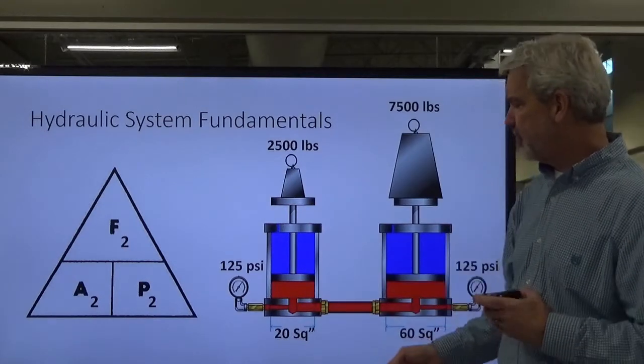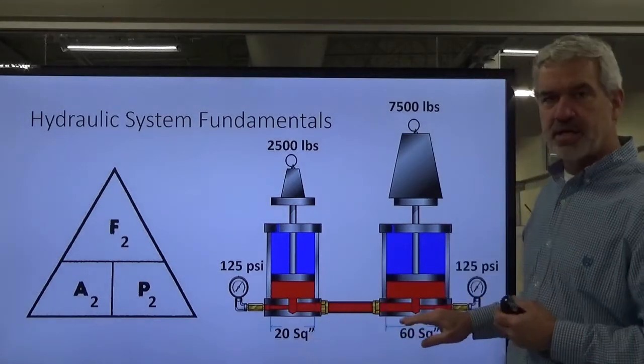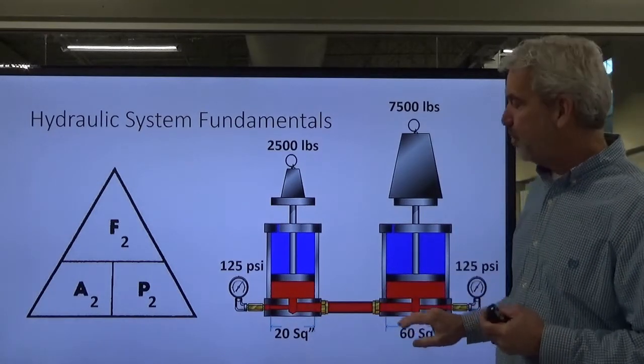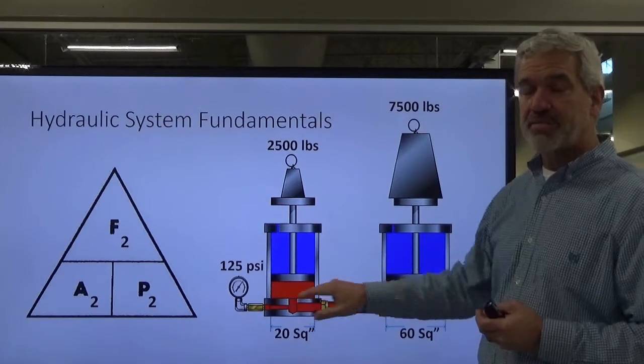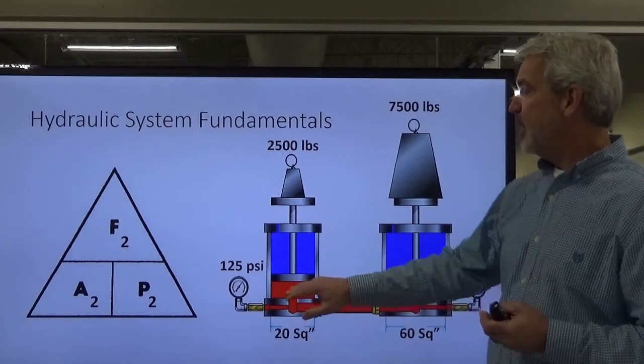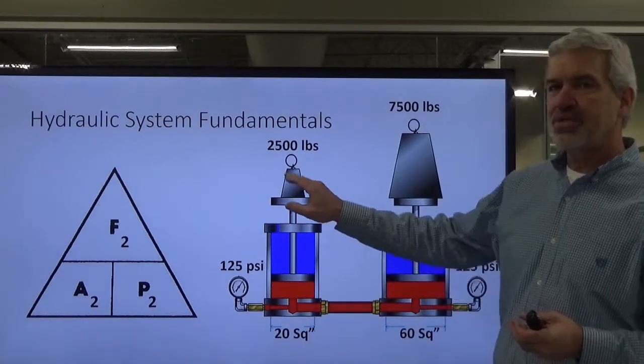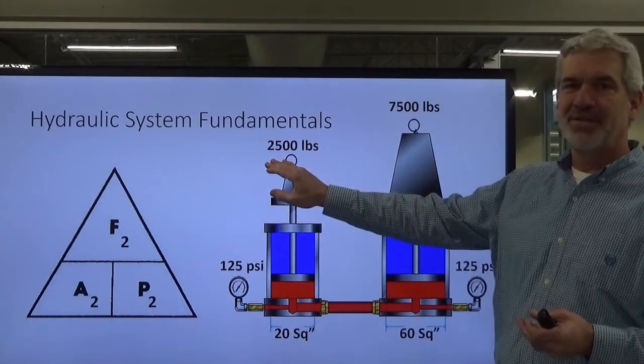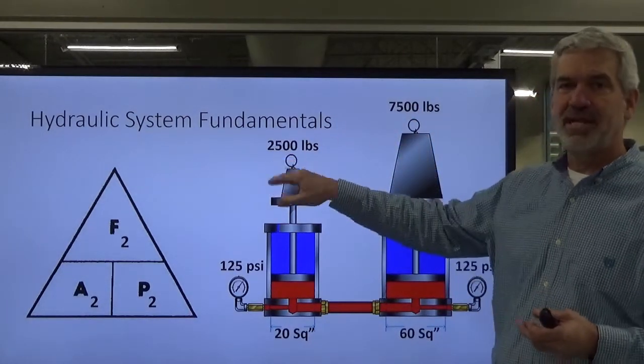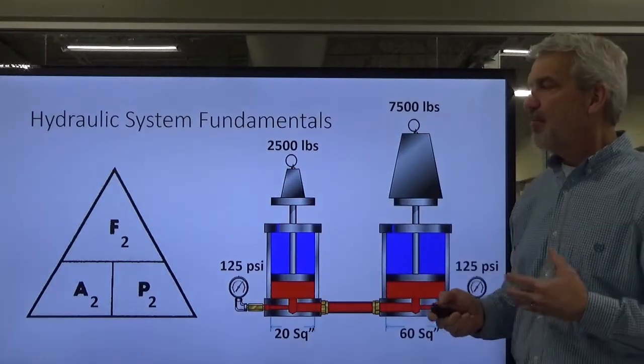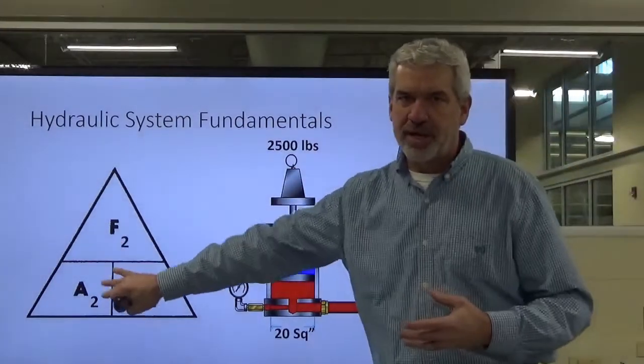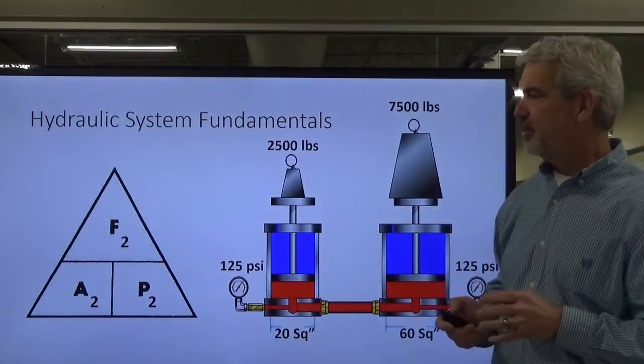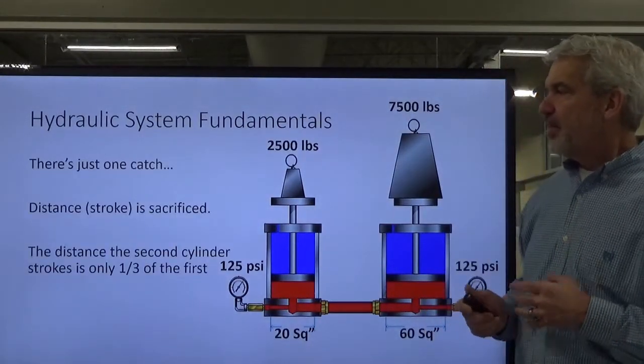So this is force multiplication. And again, you can look and see the relationship. The cylinder here on the number two cylinder is three times the square inch area, or three times the area in square inches of the first one. And it sort of stands to reason that the force would be three times the input force to output force. It would be three times the output force. So always stay with your triangle here. This formula will help you figure out everything that you need to know.